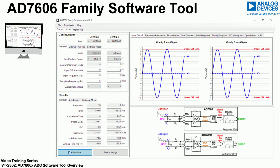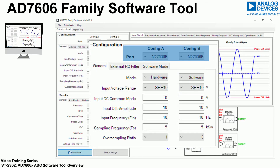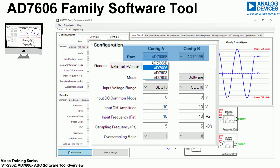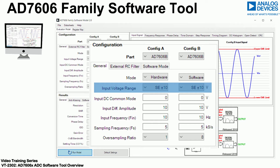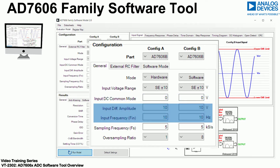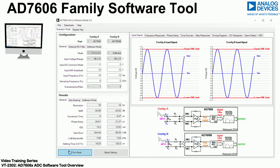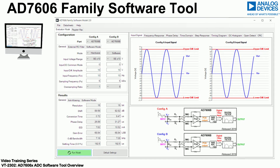Walking through the tool, go to the configuration section of the tool as shown to select the ADC. You can then select the input range you require, enter the applied common mode voltage, enter the signal amplitude and frequency for your application, enter the sampling rate and select the required averaging. Clicking the run button, the parameters entered are then used by the tool and the associated results are calculated and presented as shown.